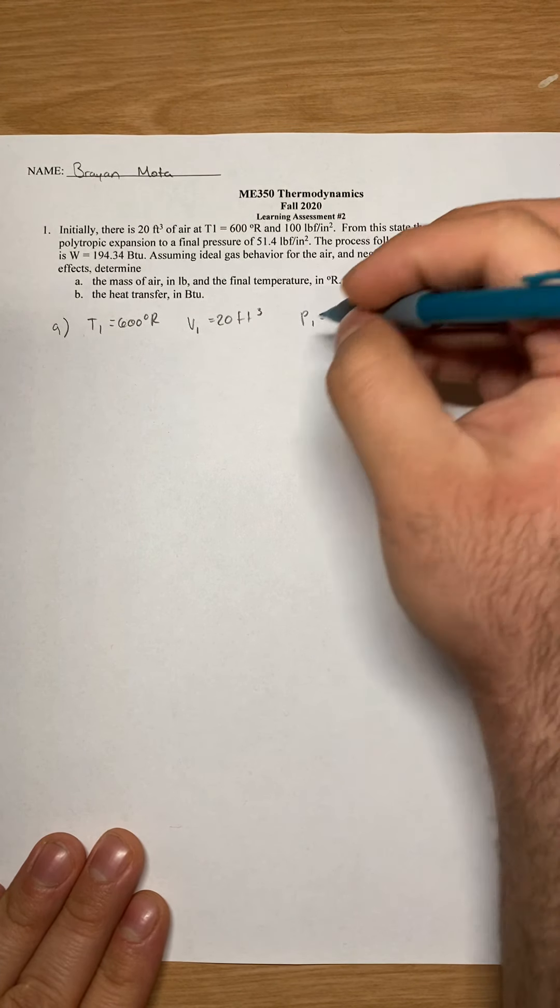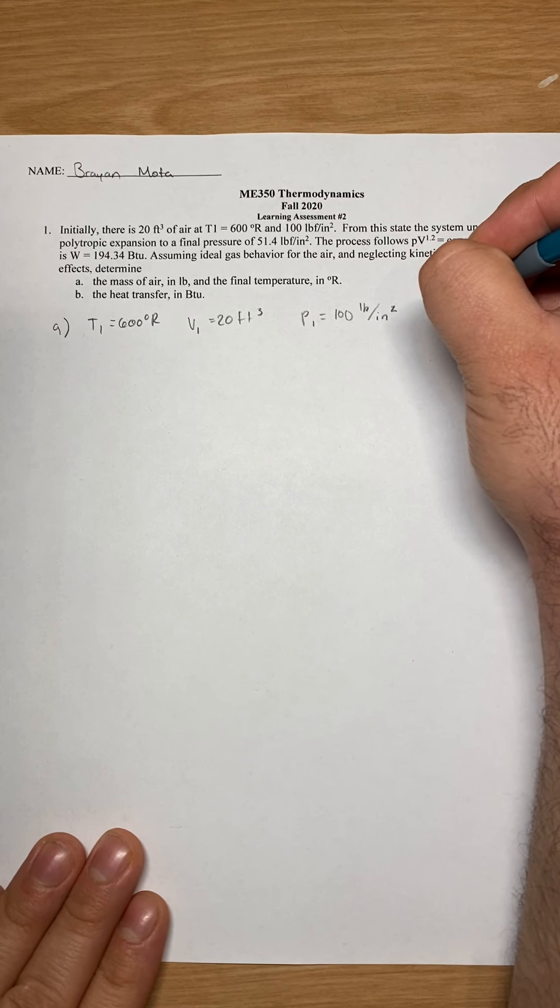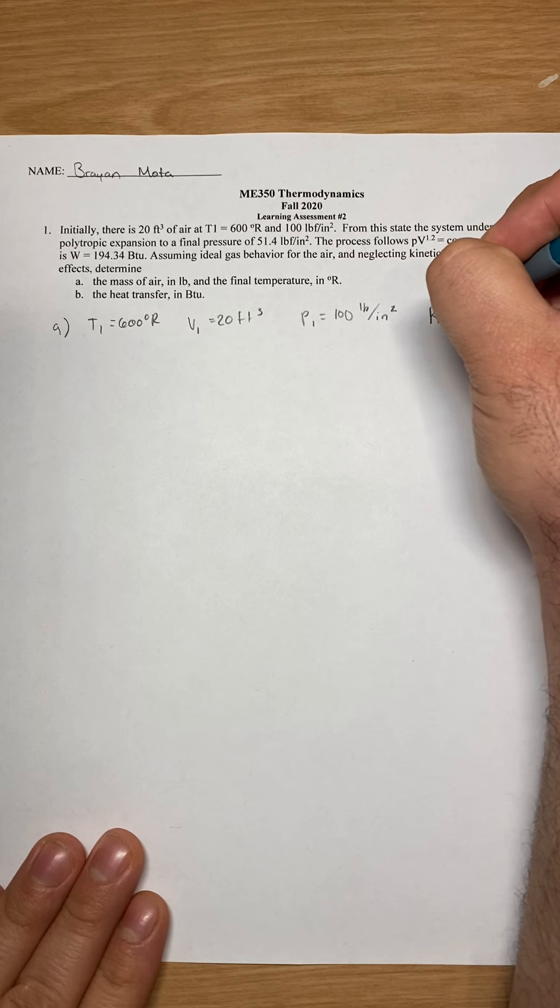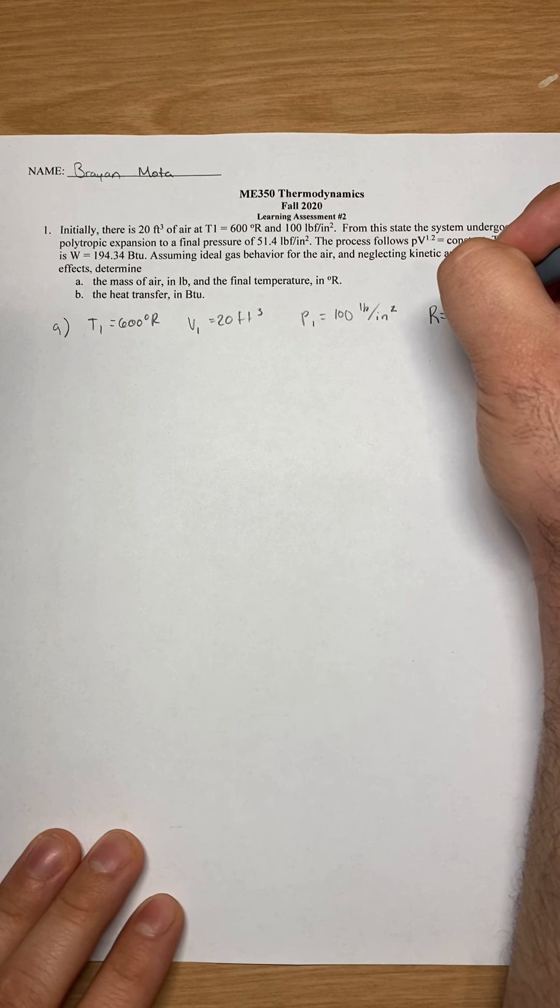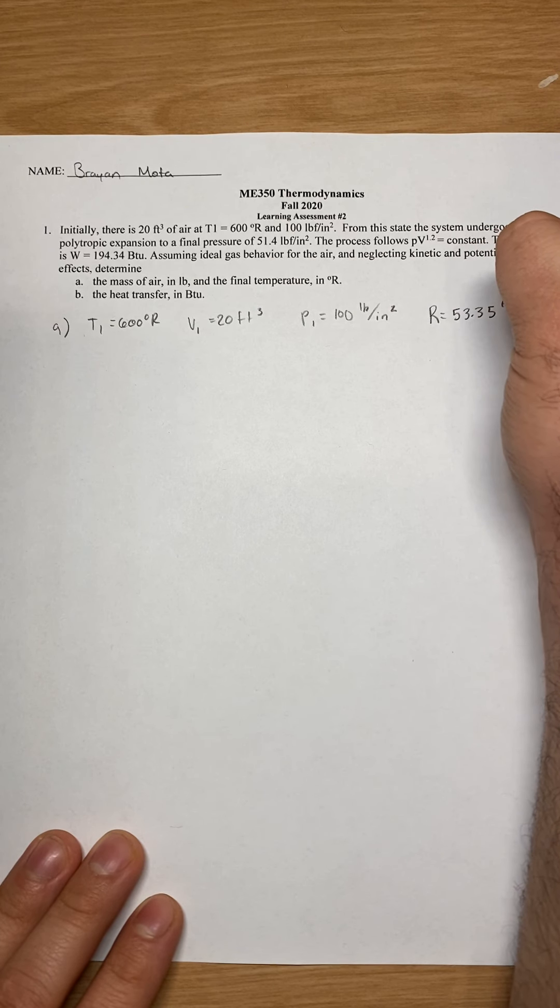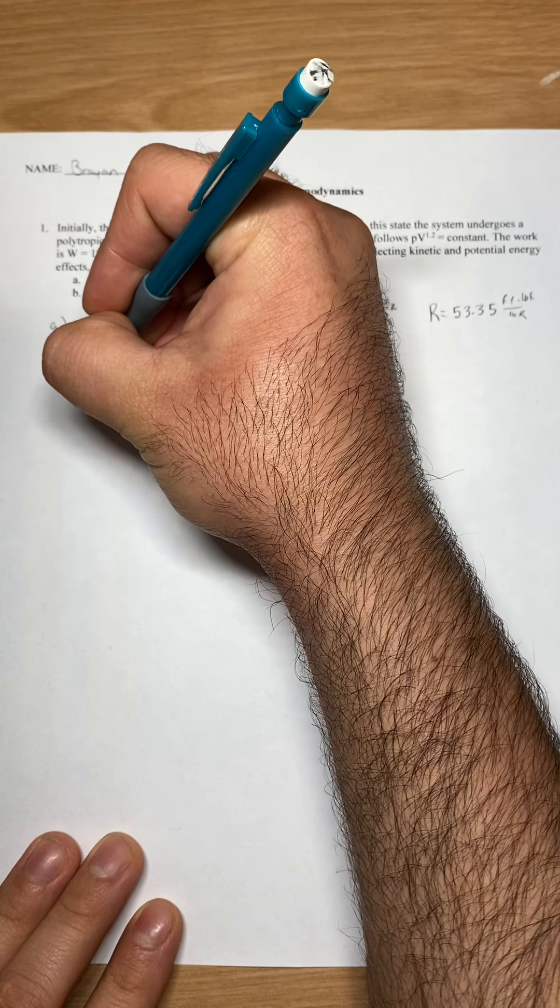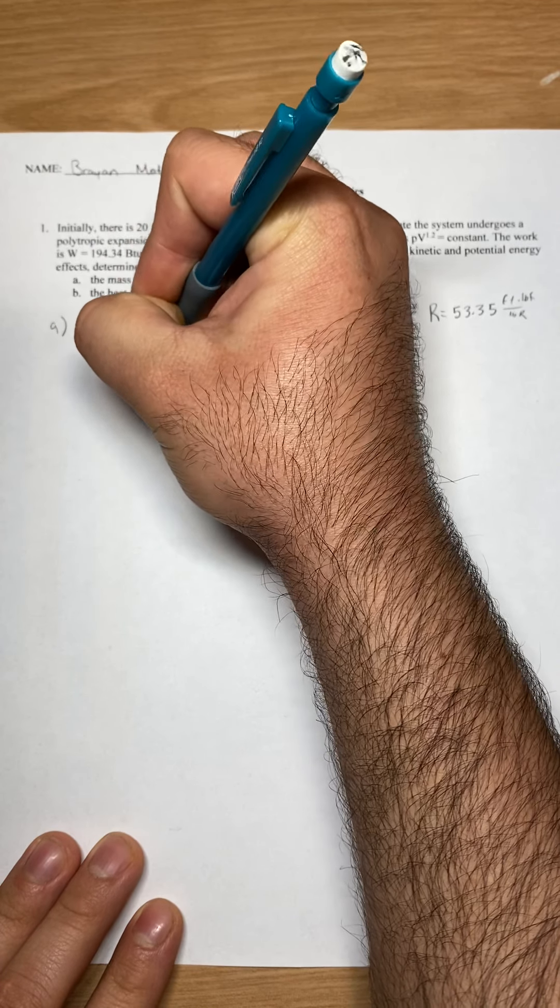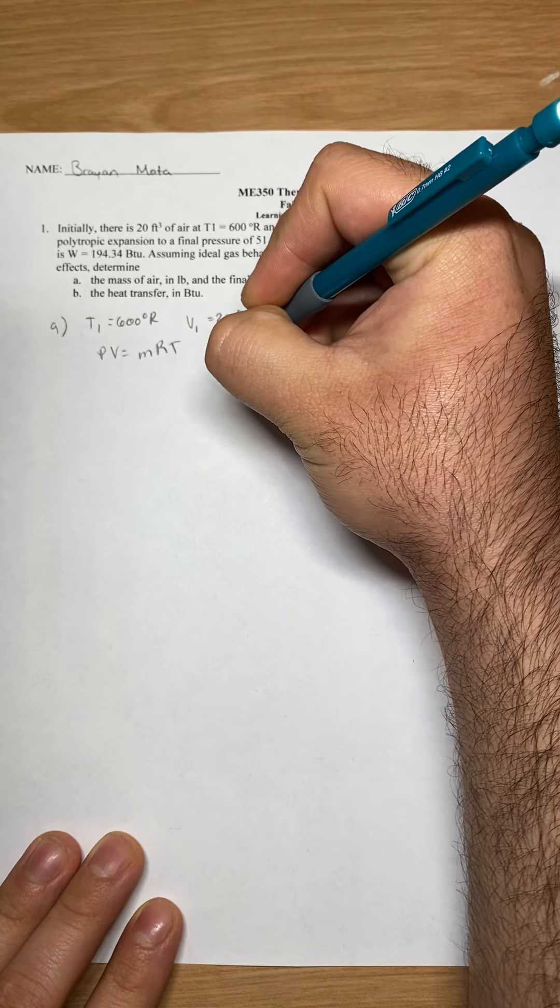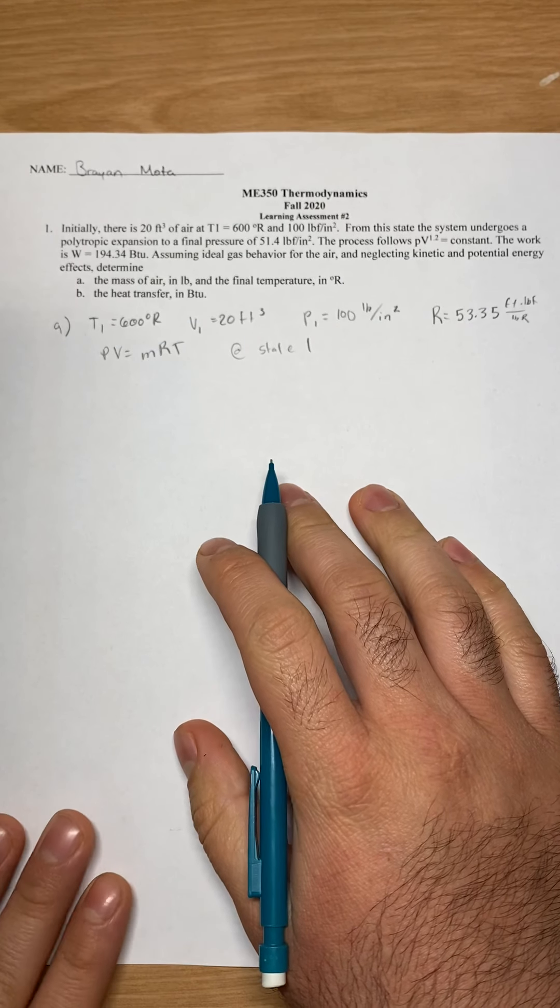And also, we know that the ideal gas law, the constant R in English units, is 53.35 feet pound force over pound Rankin. So we can use the equation PV equals MRT at state one.